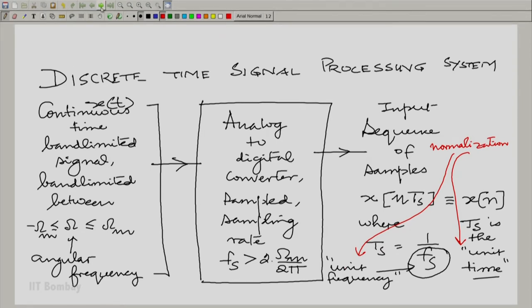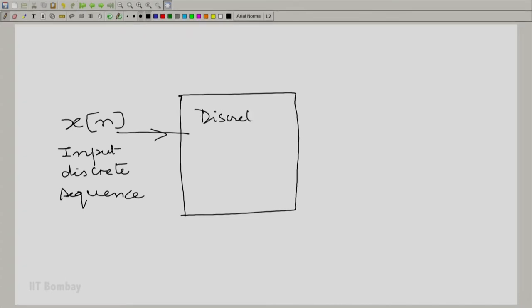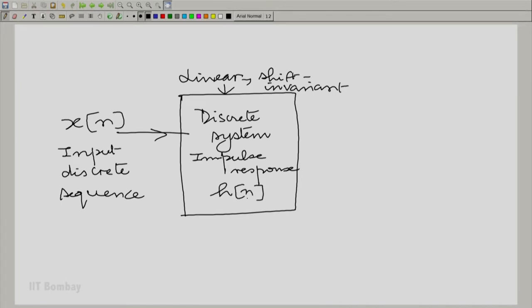Now we have this discrete sequence here. We put it into a discrete system and the discrete system has an impulse response as usual. Here we are talking about a linear shift invariant discrete system and it generates the output sequence.